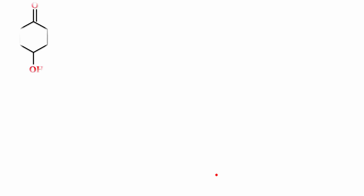Let's see another example. The carbonyl carbon gets precedence over the alpha carbon of the OH group, so ketones have higher naming priority than the OH group of alcohols. Starting with the carbonyl carbon as 1, the OH ends up at position 4. Since the prefix of OH is hydroxy, this is 4-hydroxycyclohexanone.